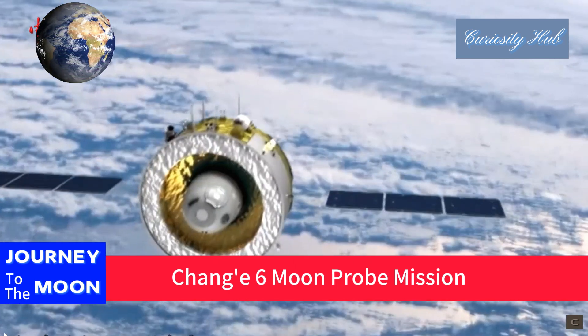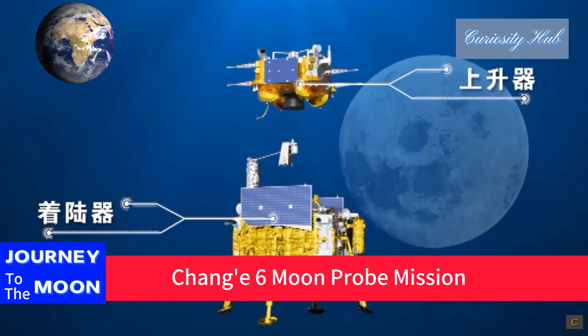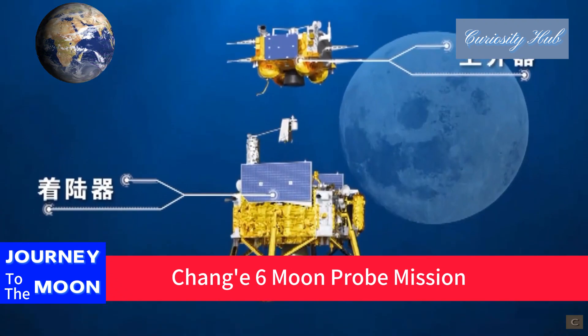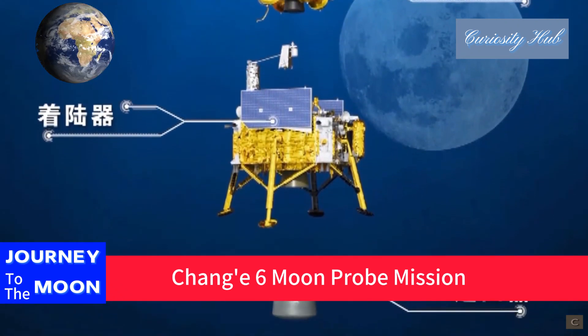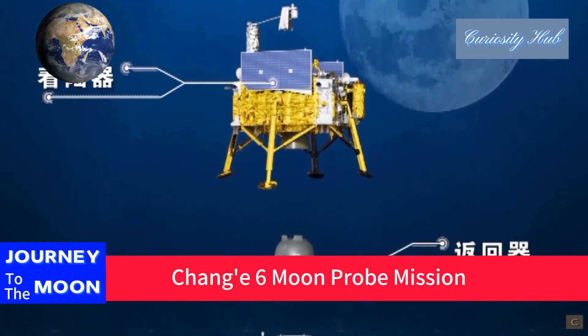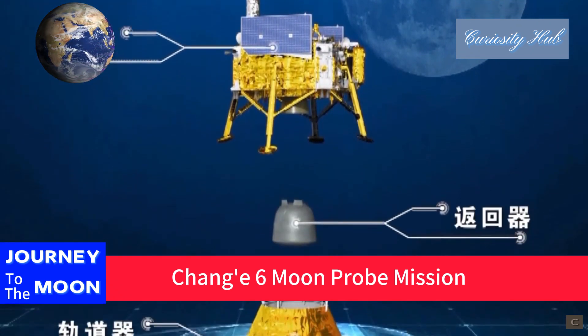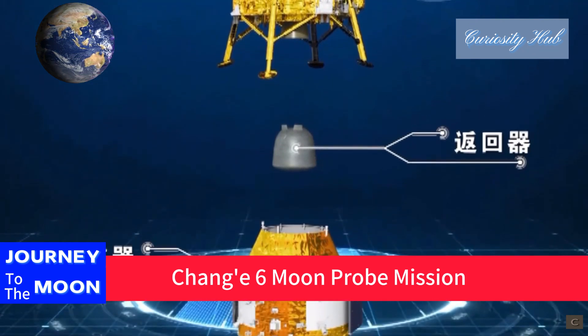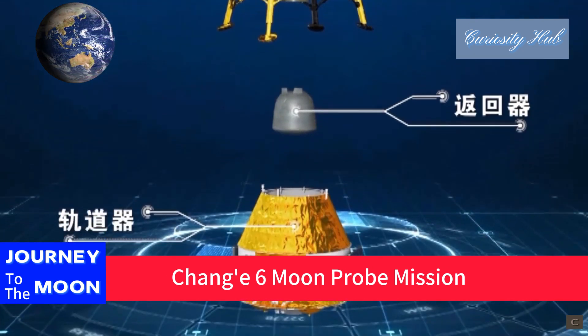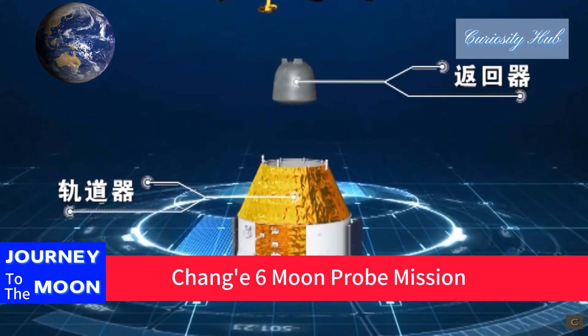During the whole process, it also involves the four components of the probe — lander, ascender, returner, and orbiter — with multiple separations and combinations.